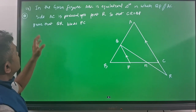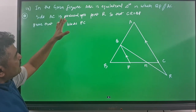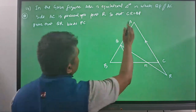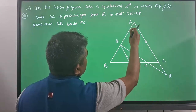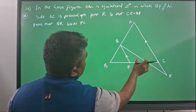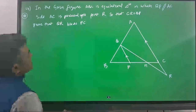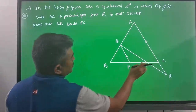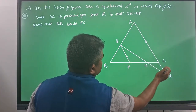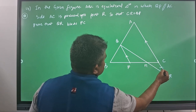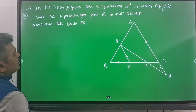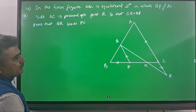Our next question is: in the given figure, ABC is an equilateral triangle in which QP is parallel to AC. Side AC is produced up to R so that CR is equal to BP. Prove that QR bisects PC.